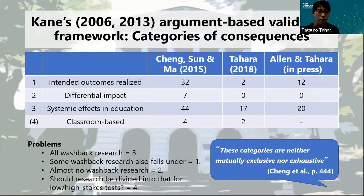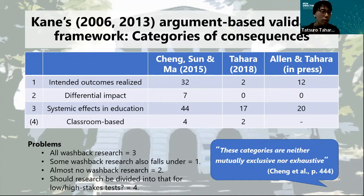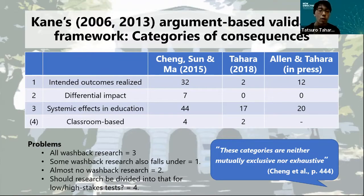Kane's framework is the argument-based validation framework. This washback study used its framework of categories of consequences. However, using Kane's category had difficulties in categorizing the washback studies — for example, some articles overlapped between category one (intended outcome realized) and category three (systemic effects in education). In our study, all studies can fall into the third category. As Cheng et al. said, these categories are neither mutually exclusive nor exhaustive.